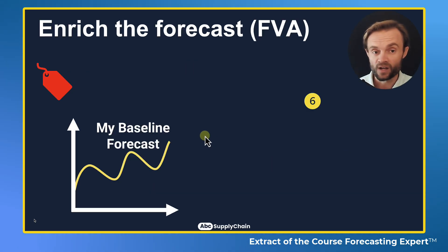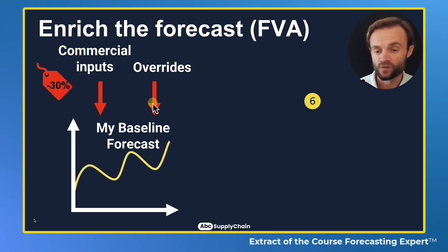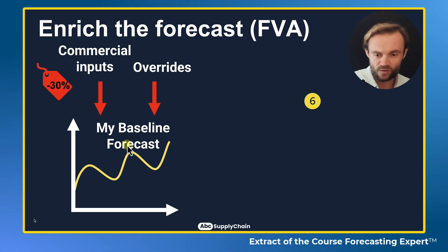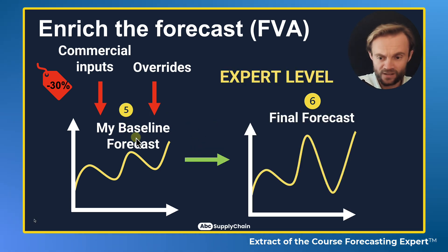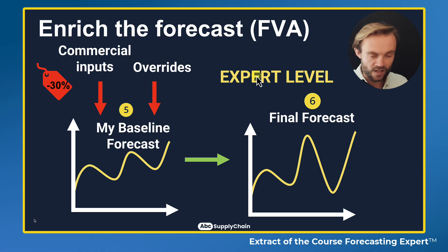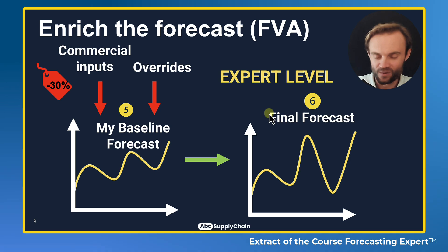Then you can enrich the forecast with what we call forecast value added. For example, you can include commercial inputs — you say, okay, I have my baseline forecast, but we're going to do a minus 30%. Or you can override in the past — maybe you had too many unplanned orders, so you can change that. You override and you get your final forecast, including a big peak for a promotion or a reduction elsewhere. This is more of a professional and expert level. Make sure you have a great baseline first — that's the 20/80 rule: 20% of the action, 80% of the results. Then if you feel ready, you can enrich it, but focus first on the baseline.